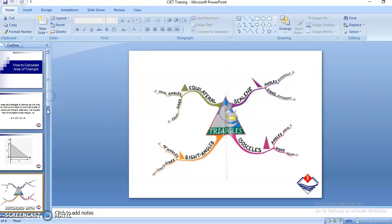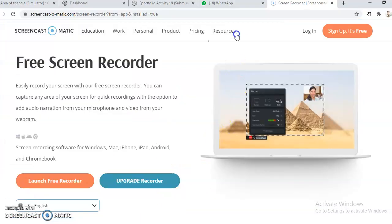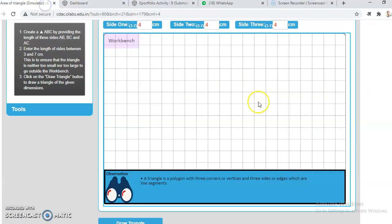Now we will go into a simulation to understand how it is calculated. So we will go into this simulator. What you have to do is create a triangle first of all. Here we are having side one, side two, and side three.